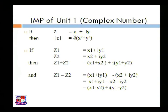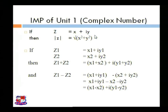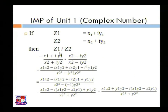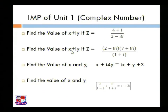We already discussed how to find the modulus of z. If any complex number z is equal to x plus iy, then modulus of z is equal to under root of x squared plus y squared. We also discussed addition, subtraction, multiplication, and division of two complex numbers.